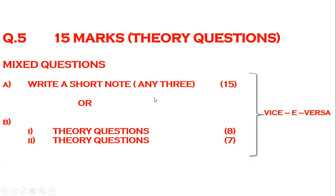Coming to question number 5 — that is 15 marks and will be 30 questions. It will again be a mixed question. Question 5A can be 'write a short note, any three' for 15 marks, or question 5B will have two theory questions for 8 marks or 7 marks.